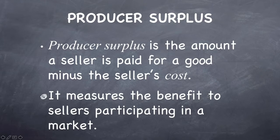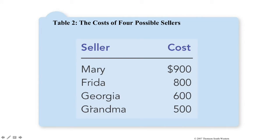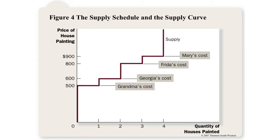Producer surplus is the opposite — it looks at things from the seller's point of view, measuring the price a seller receives minus the seller's cost. For example, with four house painters: Grandma's cost is $500, Georgia's is $600, Frida's is $800, and Mary's is $900. Just as consumer surplus relates to the demand curve, producer surplus is closely related to the supply curve, and we can create a stepped supply curve representing each seller's cost.